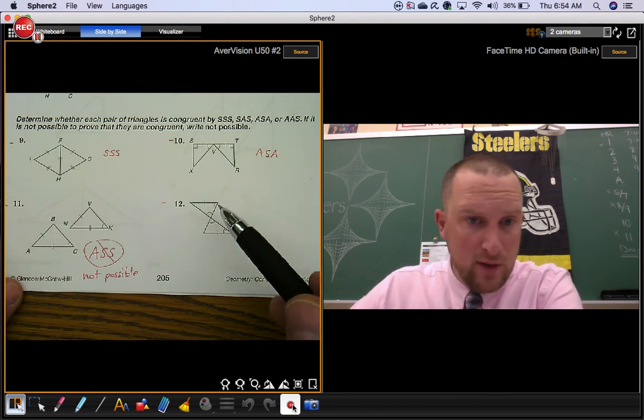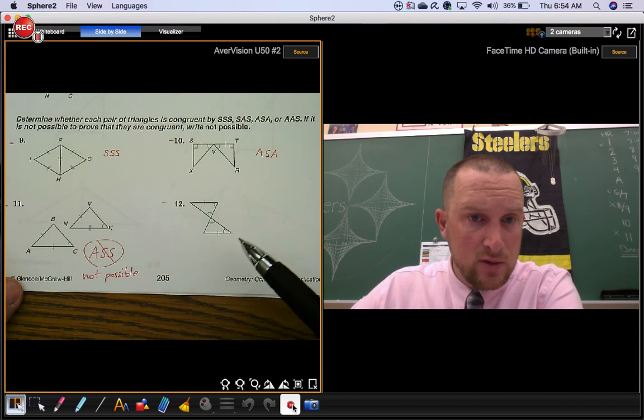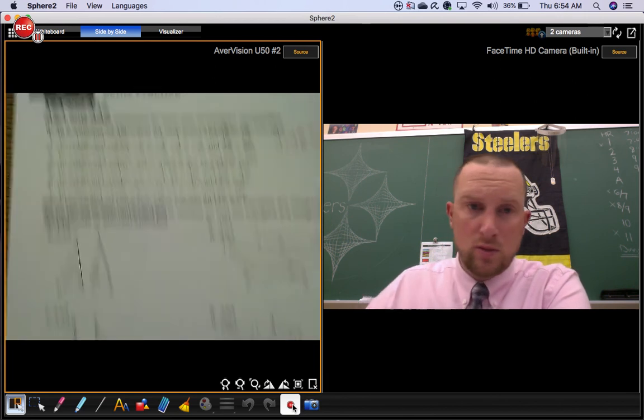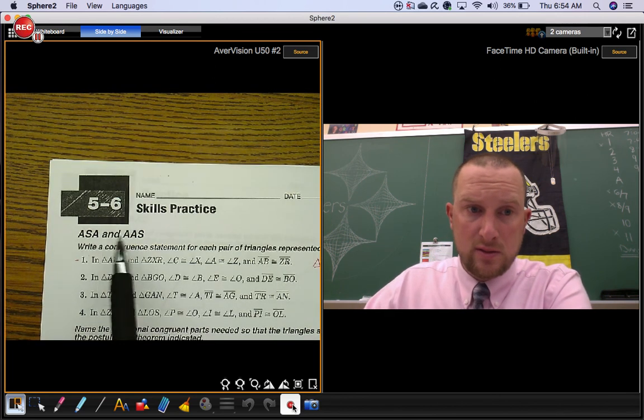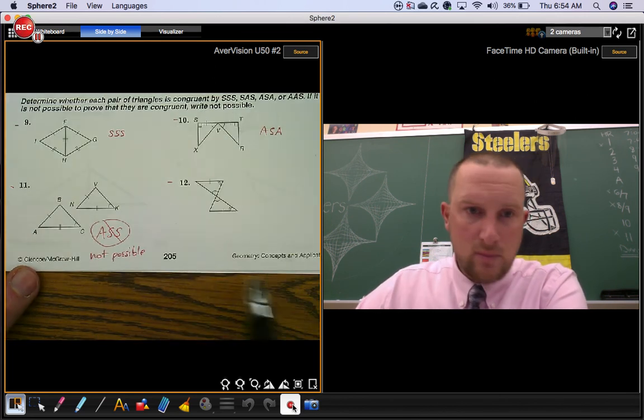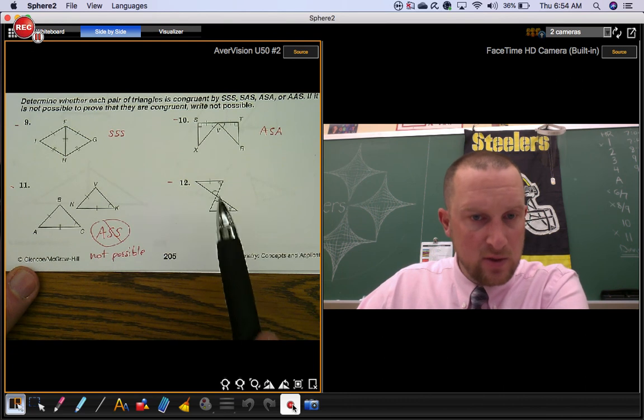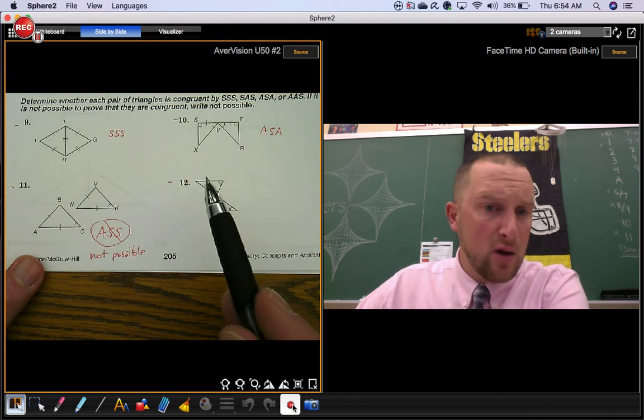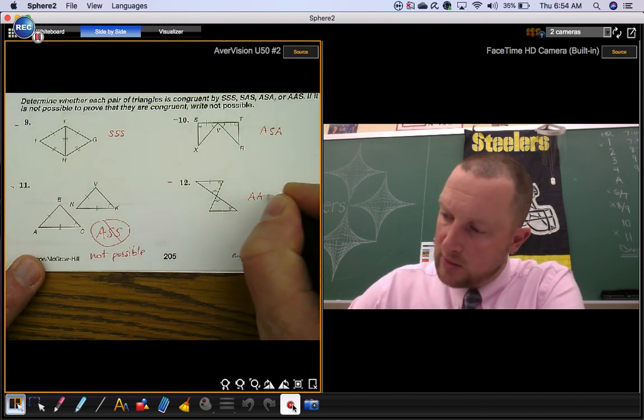Last one, number twelve. We have two pairs of congruent angles and we have a pair of congruent sides. So it's one of these. Where are the congruent sides? Are they in between or not? They're not in between. They're not included. And they're on the corresponding non-included side. This is angle angle side.